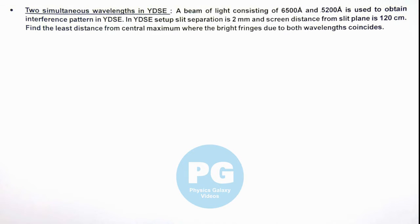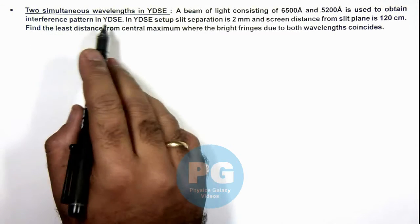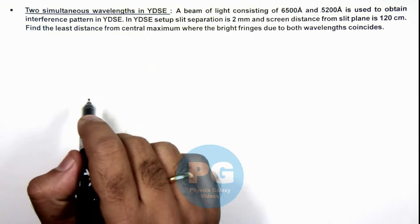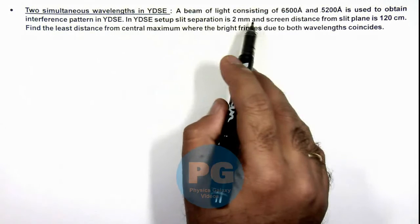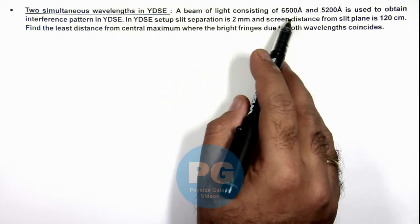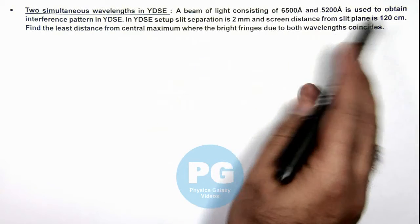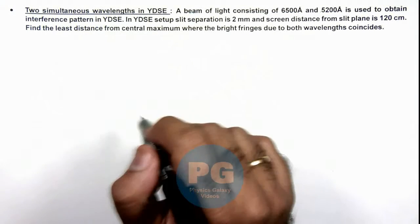In this illustration we'll discuss about two simultaneous wavelengths in YDSE. We are given that a beam of light consisting of 6500 angstrom and 5200 angstrom is used to obtain interference pattern in YDSE.